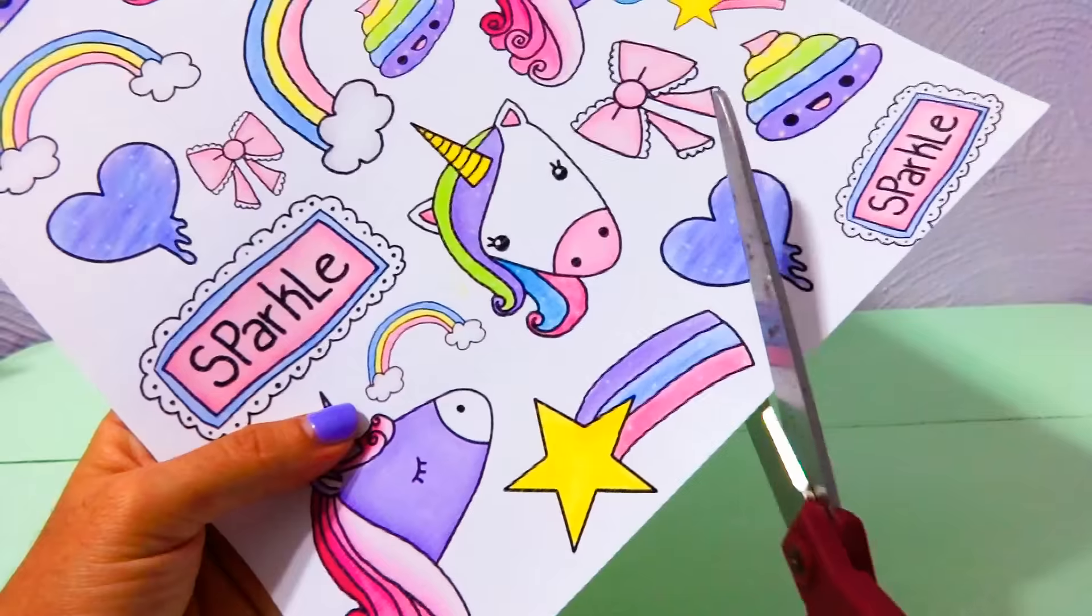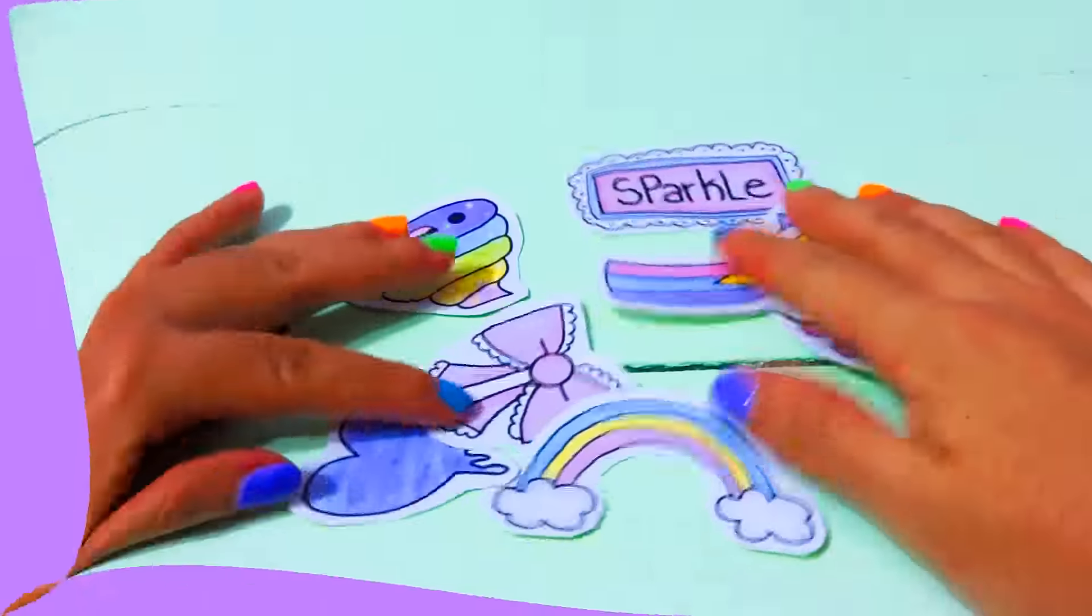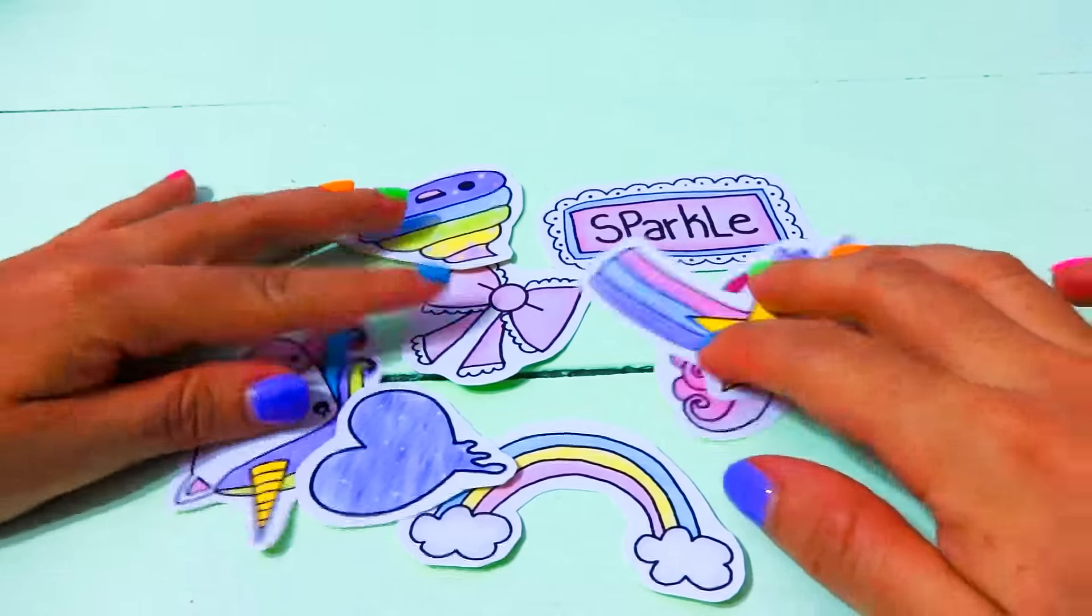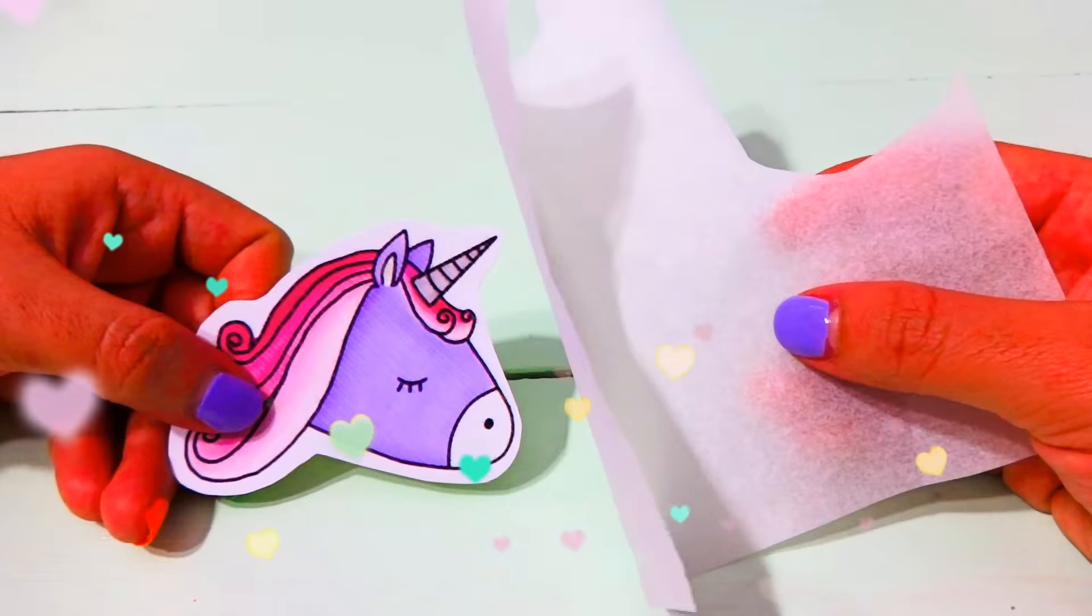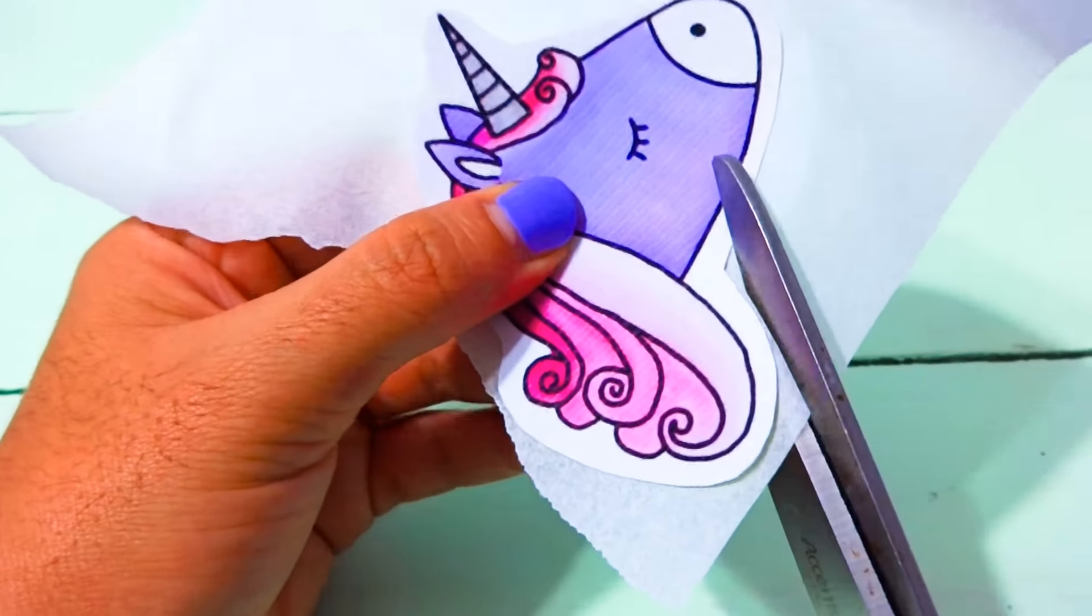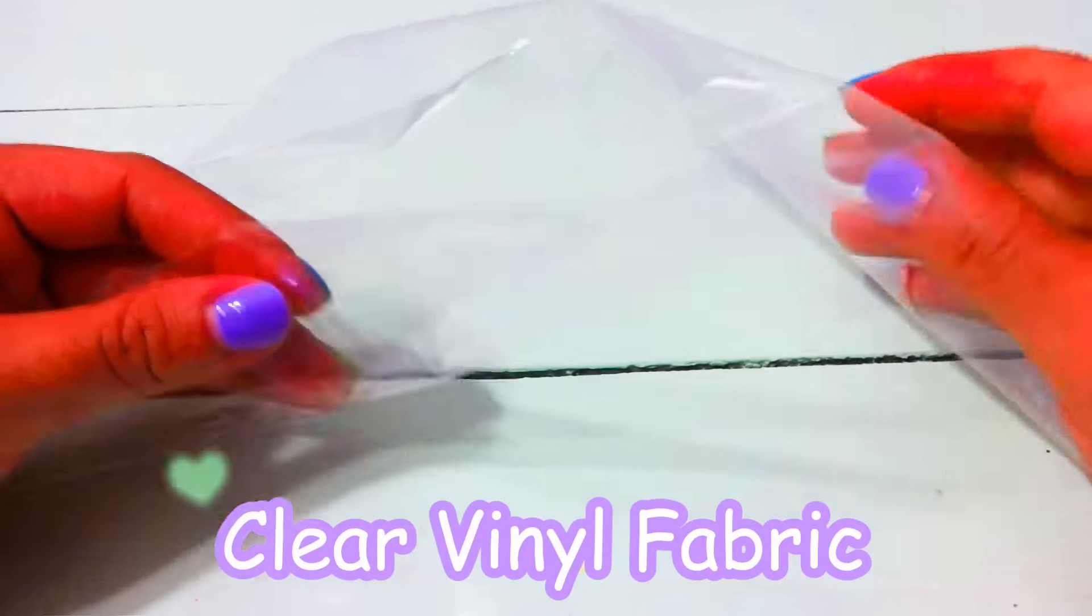Use your scissors to cut out the outline. Once you have all of your stickers cut out, grab some parchment paper, wax paper, or baking paper—they're all the same thing. Then trace the outline out. It doesn't have to be perfect, just try your best.